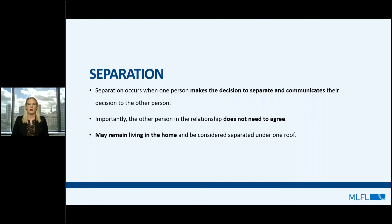Separation occurs when one person makes the decision to separate and communicates that decision to the other person. It's important to note that the other person in the relationship does not need to agree for the separation to occur. From that point, one party may choose to move out of the home, or both parties may remain living in the home and be considered separated under one roof.